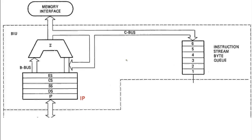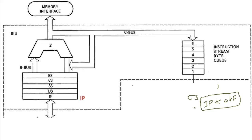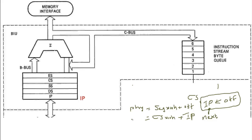Next is IP — the Instruction Pointer. IP always points to the next location. IP always contains the offset address of the next instruction — this is the highlighting point of the IP. IP is the offset address container of the CS segment. So if we want to find the address of the next instruction, according to the formula: physical address = CS × 10H + IP, where IP holds the offset address.